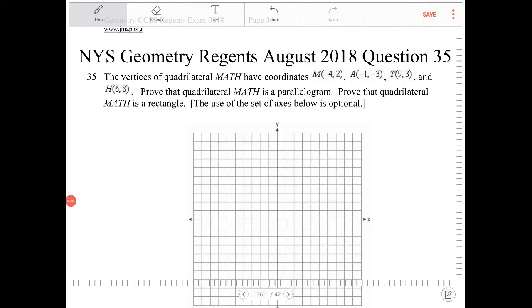The vertices of quadrilateral MATH have coordinates M(-4, 2). I'm going to plot this out as I read it. So M(-4, 2), this is M.